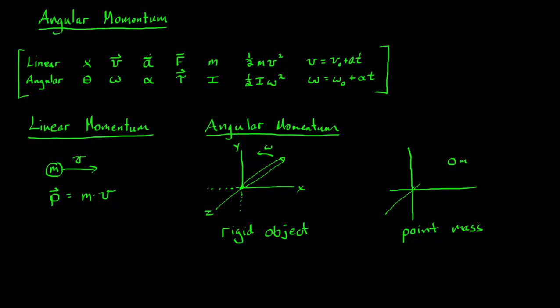In this video we're going to introduce angular momentum. Before we do that, let's go back over linear motion and use the analogy for angular to build up our angular momentum. For position, linear position is X, then we switch to angular. Acceleration becomes angular acceleration, force becomes torque, mass becomes inertia. For kinetic energy, linear is one half mv squared, but mass is analogous to rotational inertia and velocity is rotational — the equations are all the same setup.